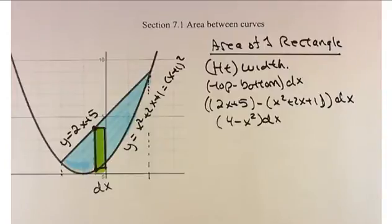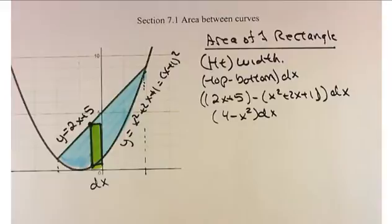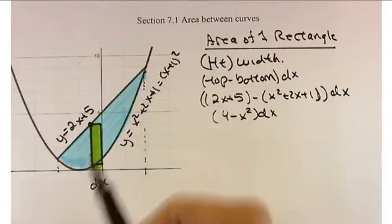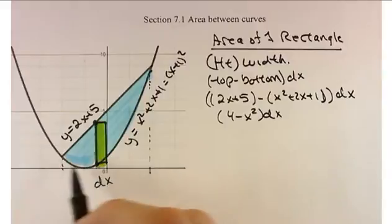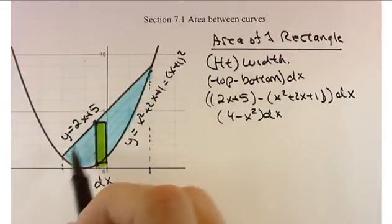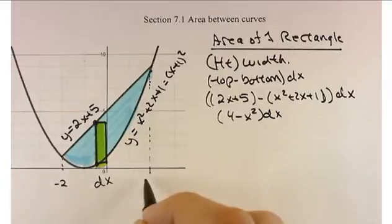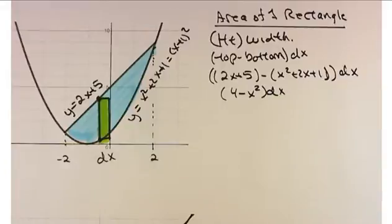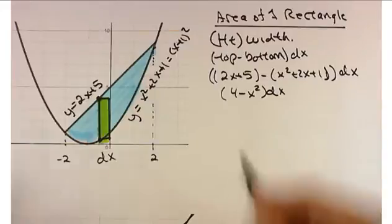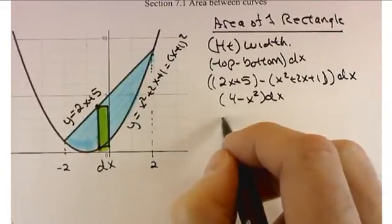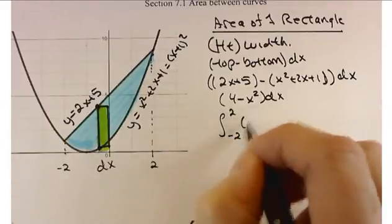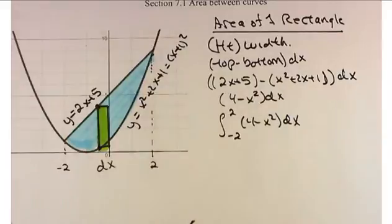That's the area of one such rectangle. To find the area of all possible rectangles, I need to figure out the limits. Moving to the left, we go all the way to x equals negative 2, and to the right as far as x equals 2. So the area calculation is the integral from negative 2 to 2 of 4 minus x squared dx. That's the important part — getting that setup.